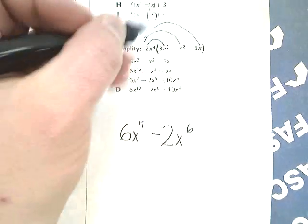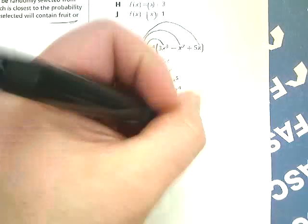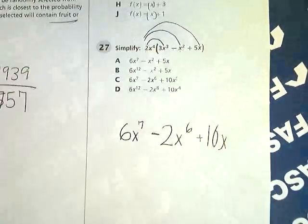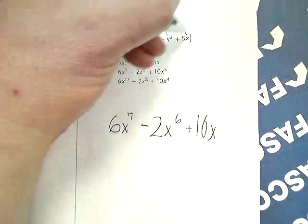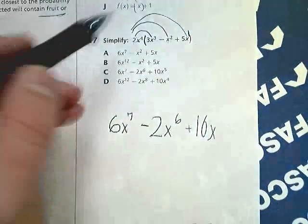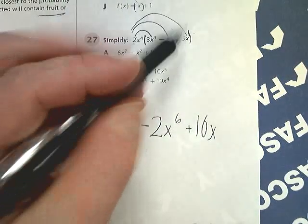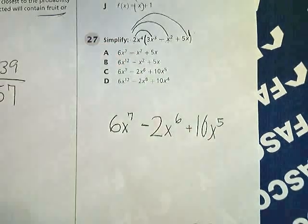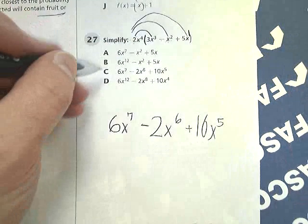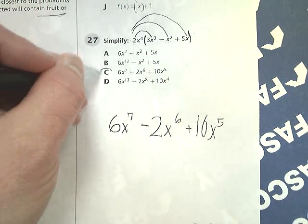And 2x to the 4th times 5x. 2 times 5 is 10x. You might want to put a 1 there just for your own edification. 4 plus 1 is 5. So I'm going to look for that answer. And that answer is letter C.